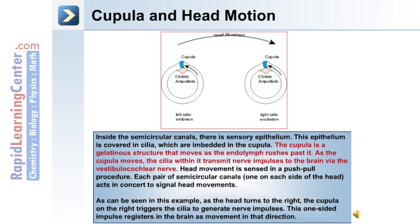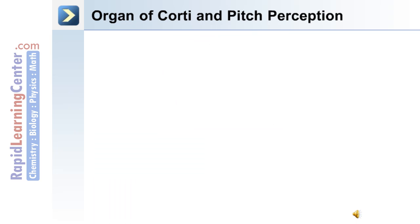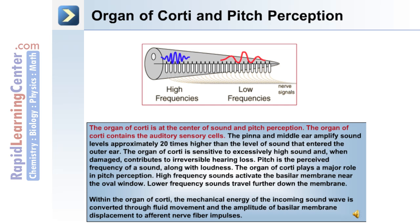This is right-side excitation; the one-sided impulse registers in the brain as movement in that direction. Human hearing also involves pitch perception. The organ of corti is at the center of sound and pitch perception and contains the auditory sensory cells. The pinna and middle ear amplify sound levels approximately 20 times higher than the level of sound that entered the outer ear. The organ of corti is sensitive to excessively high sound, and when damaged, contributes to irreversible hearing loss.